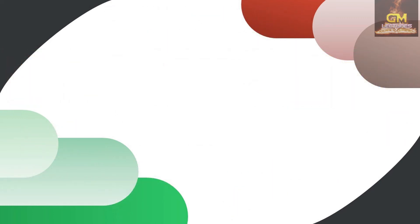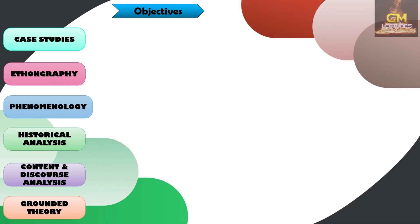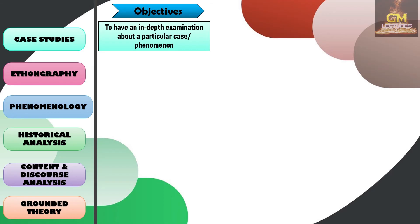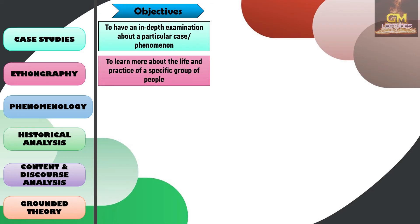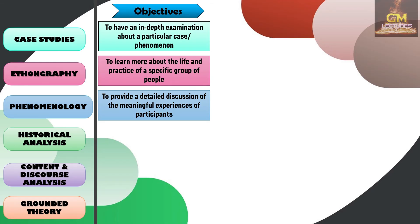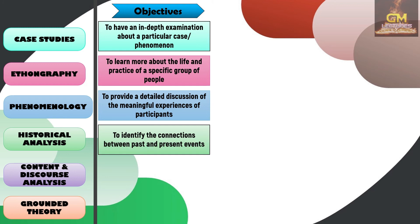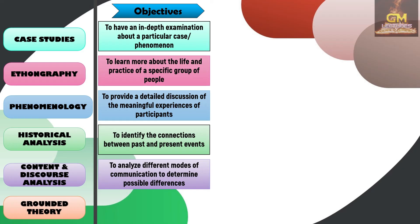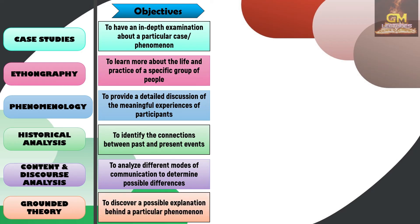Now for a short summary of the different types of qualitative research designs. In terms of objectives: case studies are conducted for an in-depth examination of a particular case or phenomenon; ethnography helps the researcher learn more about the life and practices of a specific group of people; phenomenology provides a detailed discussion of the meaningful experiences of participants; historical analysis aims to identify connections between past and present events; content and discourse analysis examines modes of communication to determine possible differences; and grounded theory aims to discover a possible explanation behind a particular phenomenon.